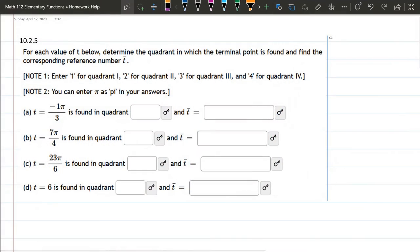So we're going to have a value of t and we want to write down the quadrant it lives in and also t bar. Now what's t bar? It tells us right here the reference angle or the reference number.